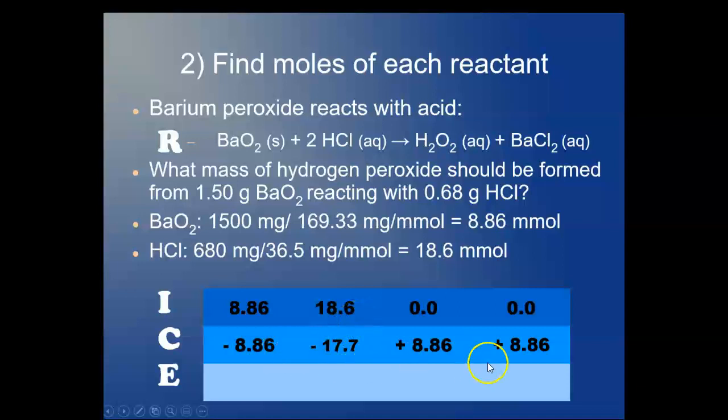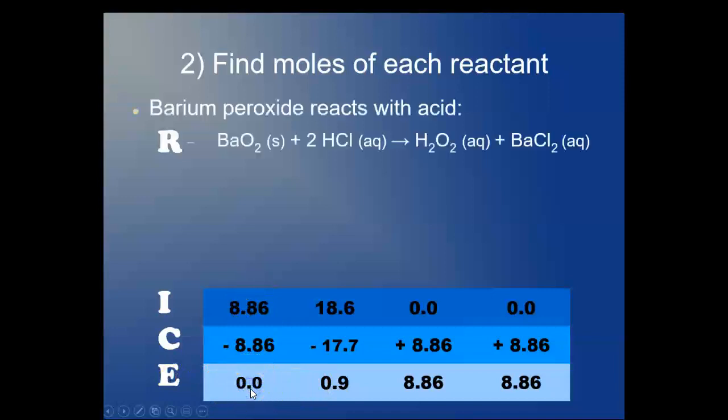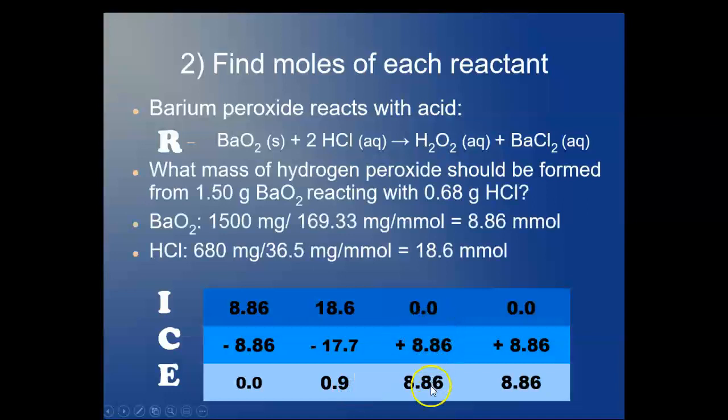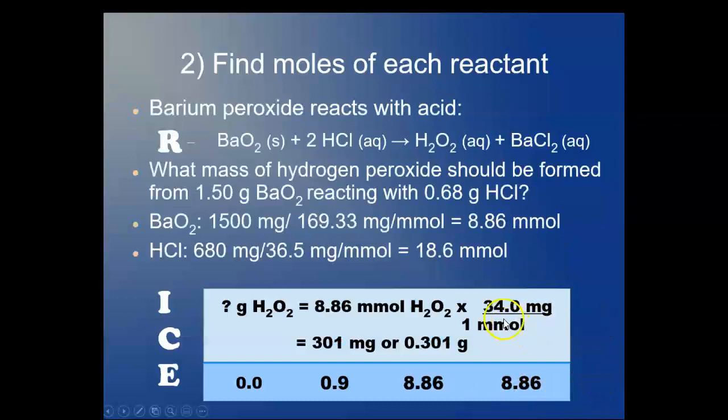Well, we're essentially done. The 1 to 1 to 1 ratio here means that the 8.86 millimoles of reactant has produced 8.86 millimoles of the hydrogen peroxide and barium chloride. Together, we've got excess hydrochloric acid. Let's say this is after, we lose all of the barium peroxide. We lose 17.7 millimoles of the hydrochloric acid and we gain the 8.86 in the hydrogen peroxide and the 8.86 in the barium chloride. And we go to the grams here, multiplying by the molar mass, 34 milligrams per millimole of the hydrogen peroxide, and we get 301 milligrams or 0.301 grams. And that's the answer.